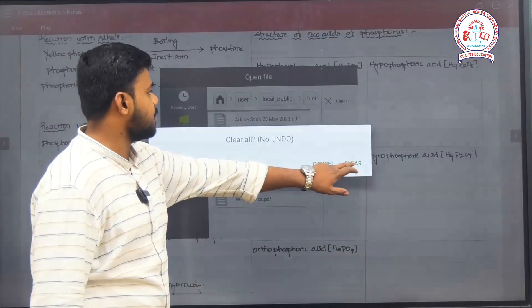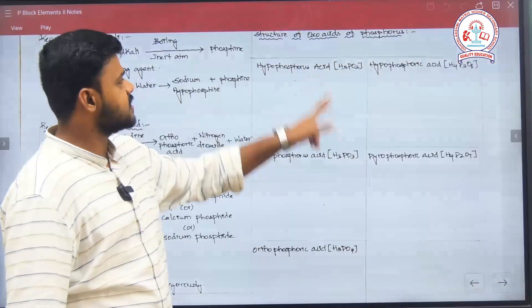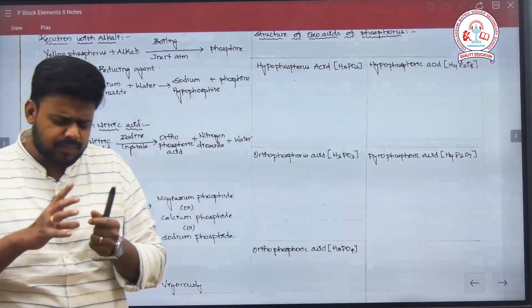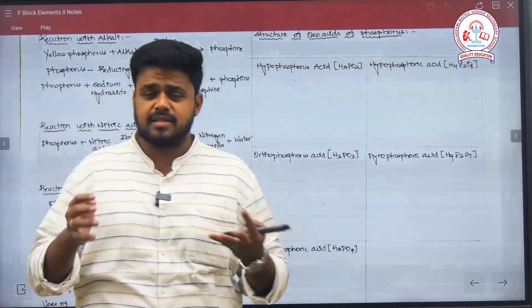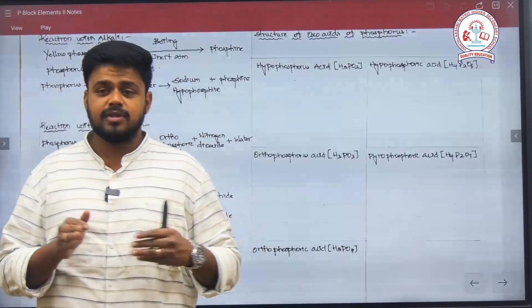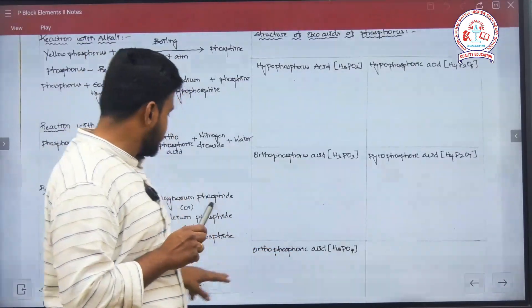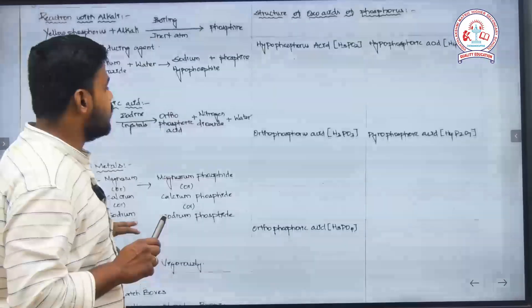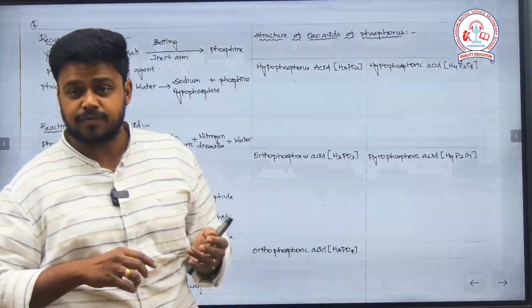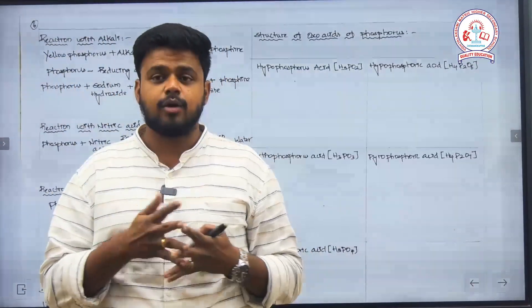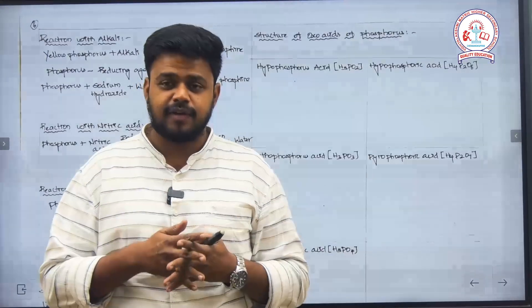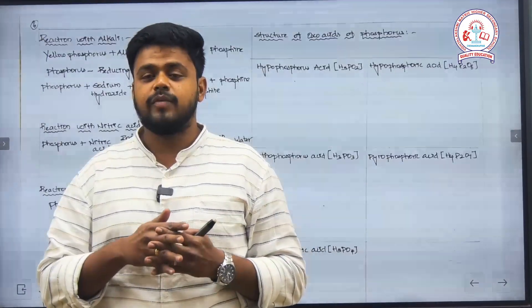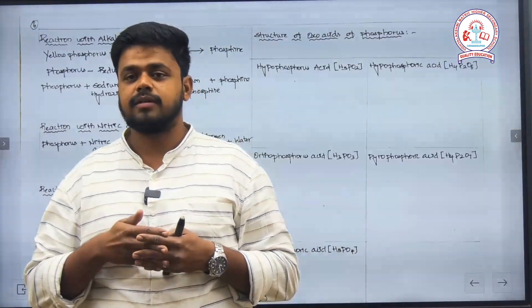These are all the topics covered regarding the structure of phosphorus compounds — the oxoacids of phosphorus, allotropes of phosphorus, and reactions involving phosphorus with acids and metals. In the upcoming video, we will look into phosphorus trichloride, phosphorus pentachloride, and the oxides of phosphorus. We will continue the rest in the following session. Thank you.